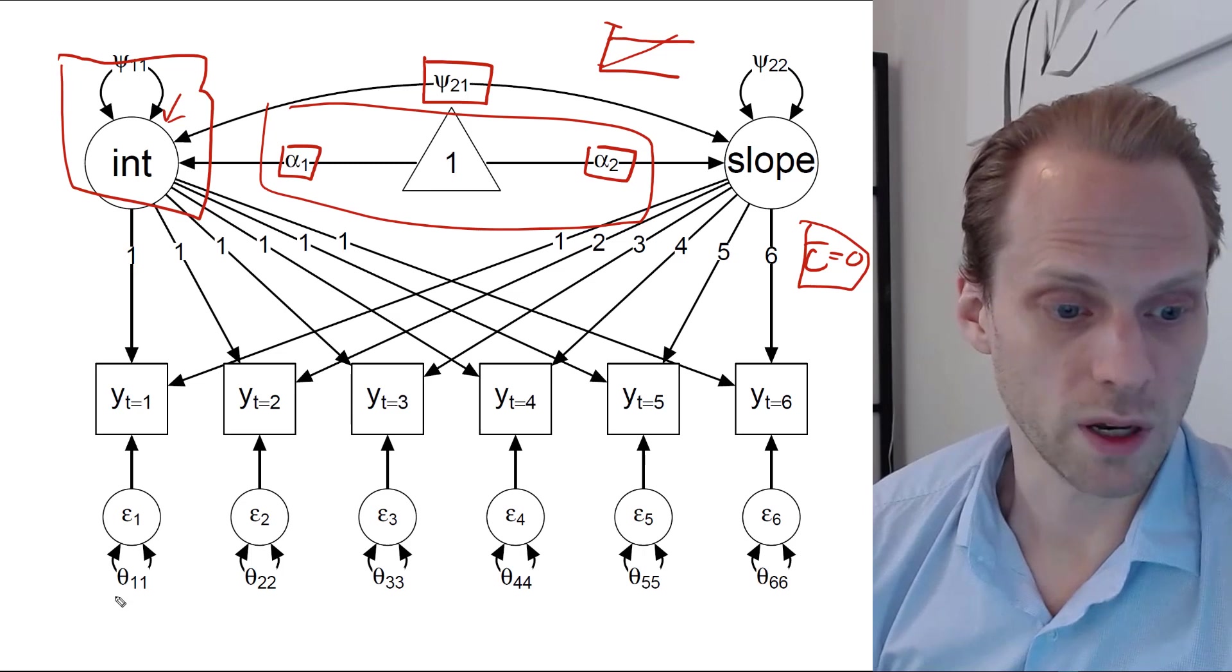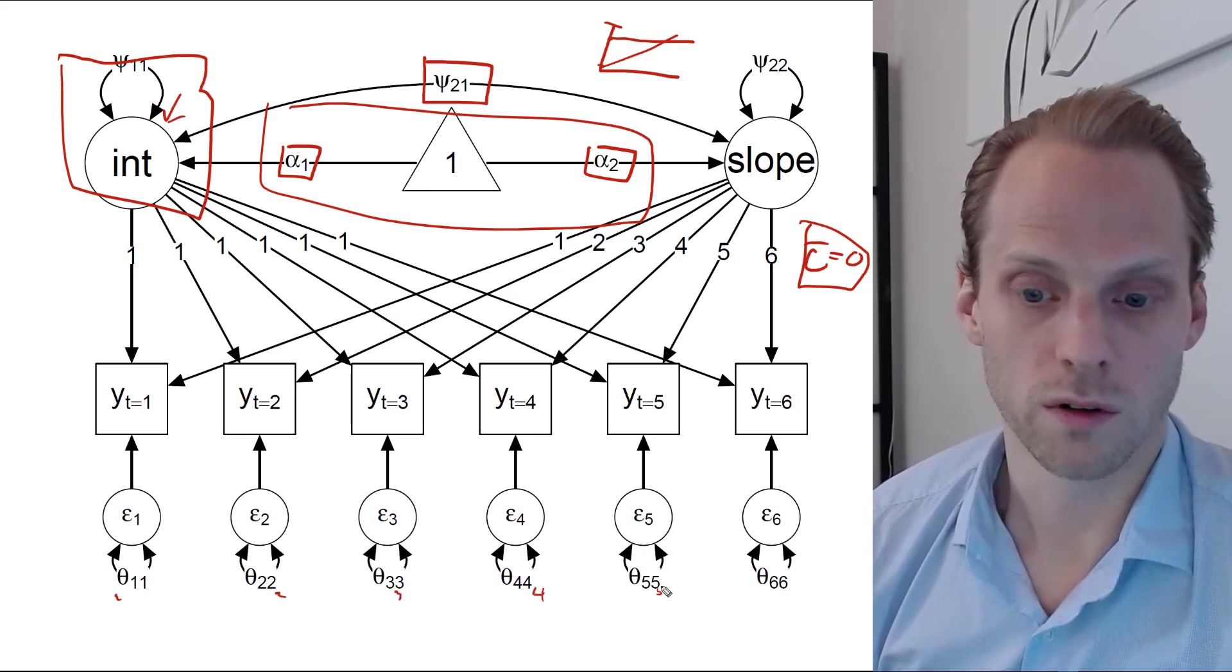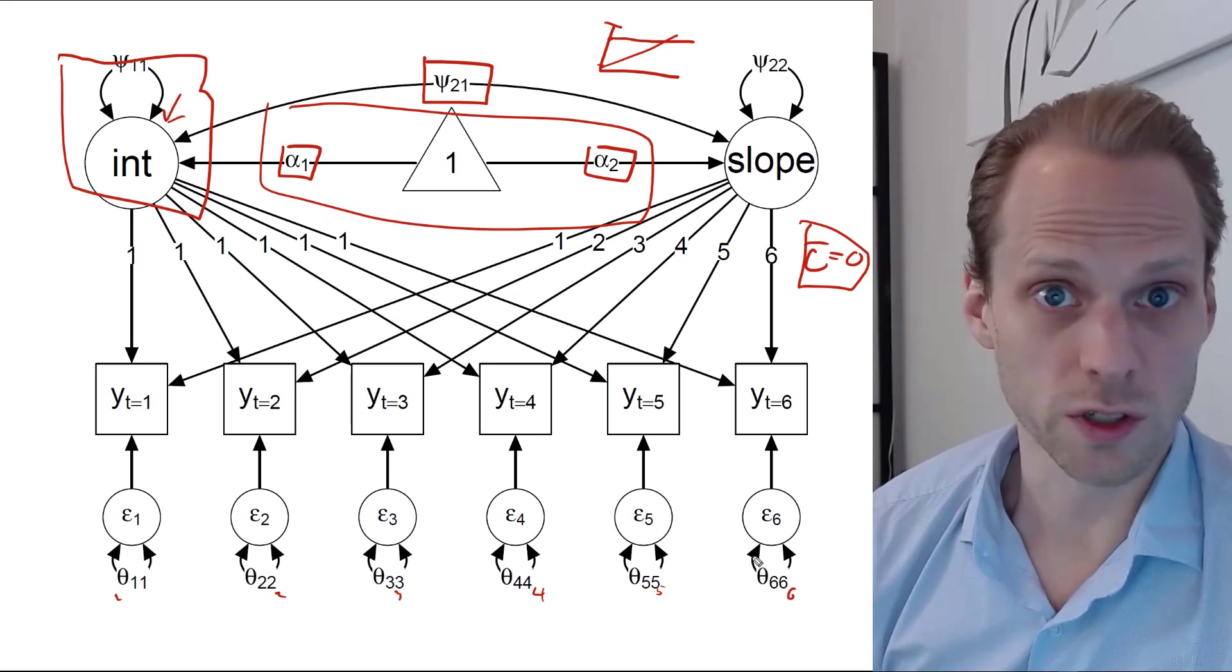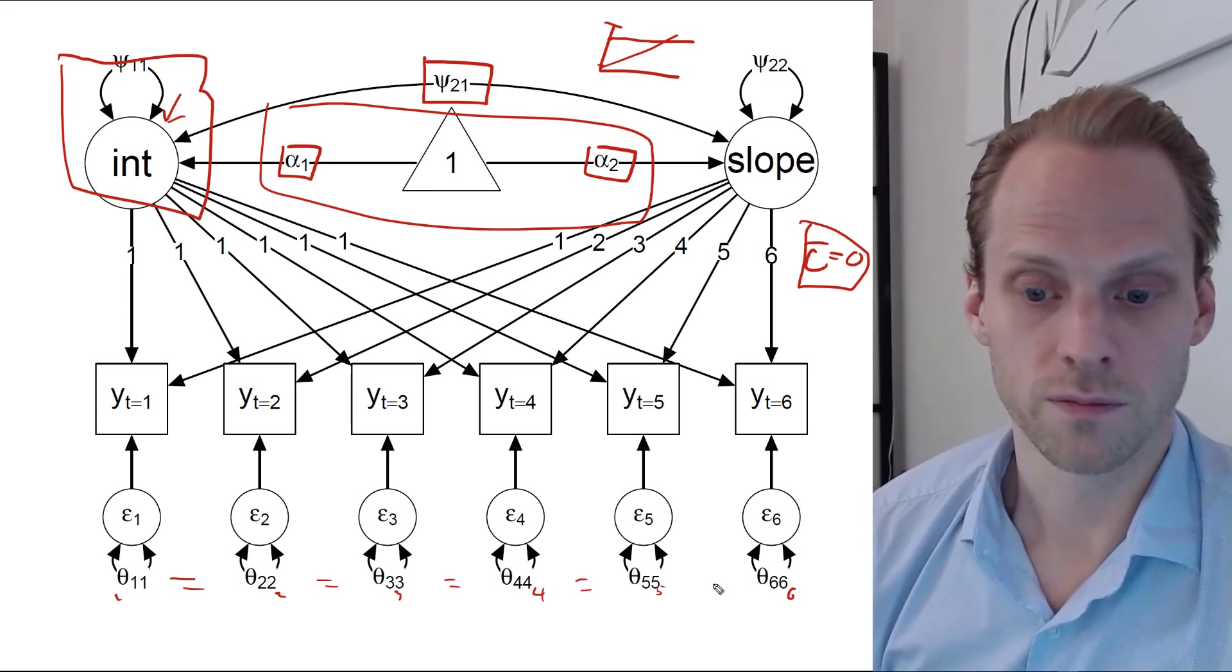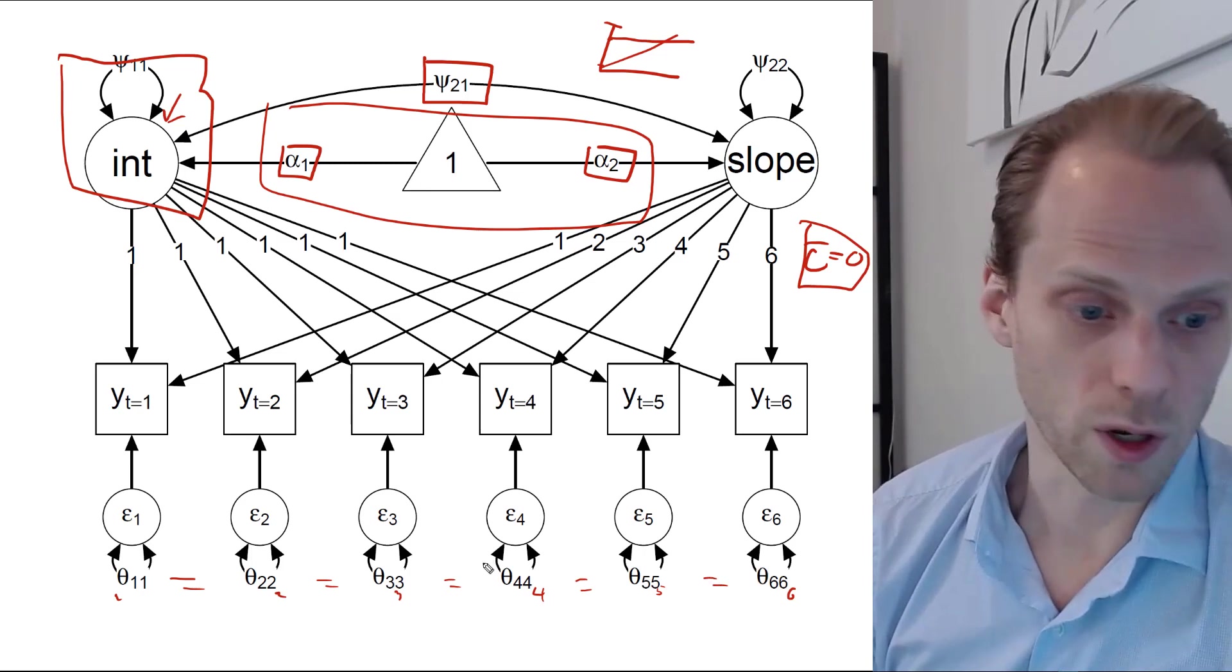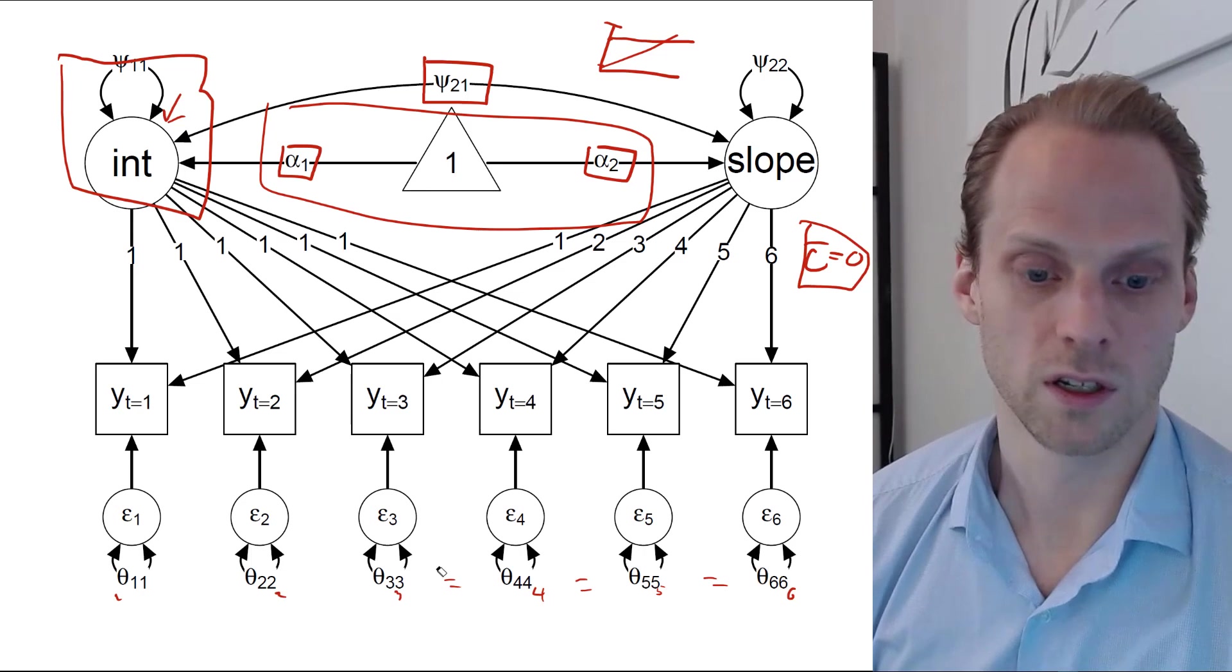How many parameters do we have? We have one, two, three, four, five, six residuals. And sometimes you'll see that people put equality constraints here. That happens, so then you have only one, but let's say now we don't have that, so we have six residuals.